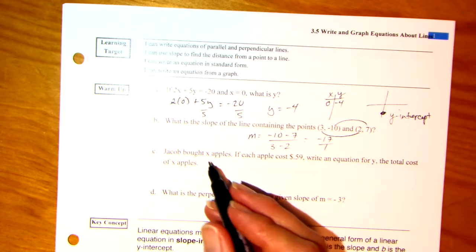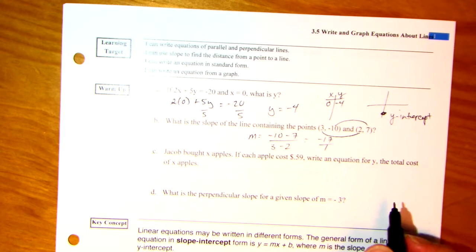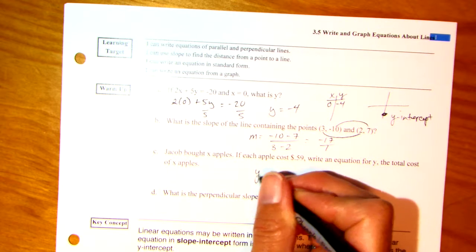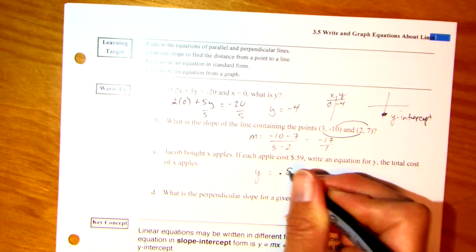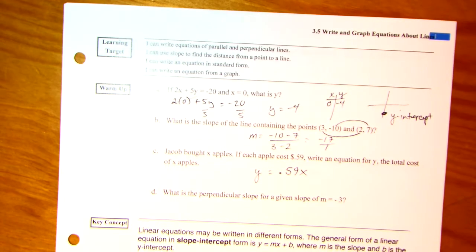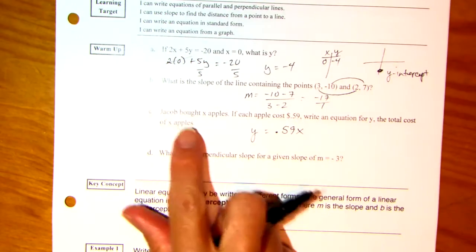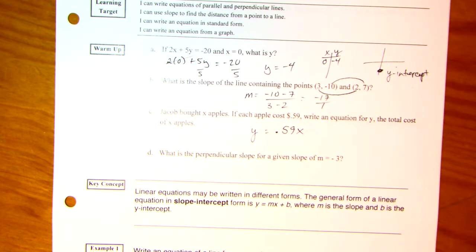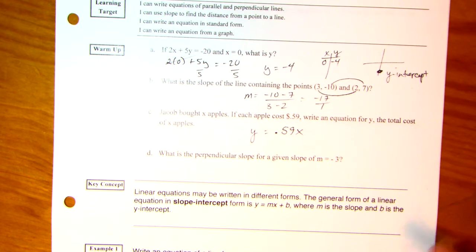And Jacob bought so many apples. If each apple costs 59 cents, write an equation for y with the total cost of apples. It's just y is equal to 0.59x. Okay? When you see those story problems, or number stories I like to call them, don't be afraid of them.